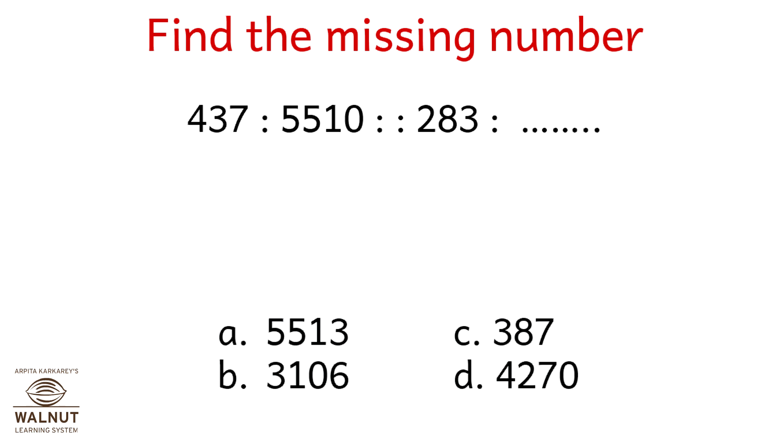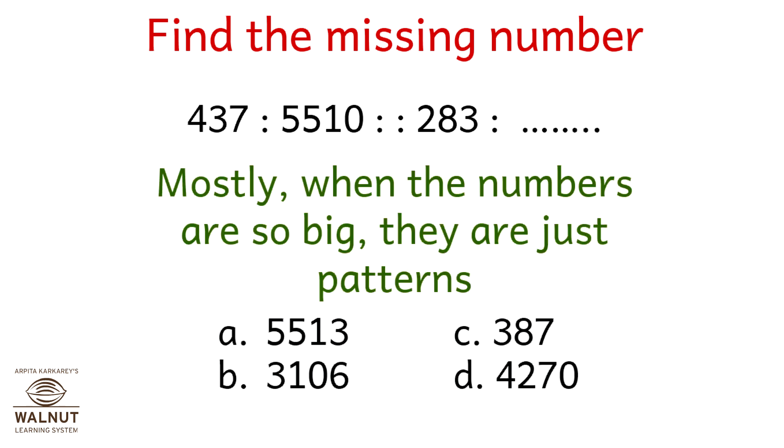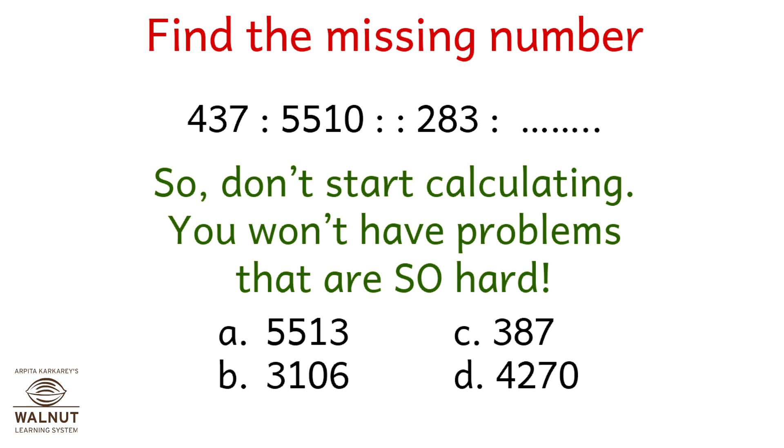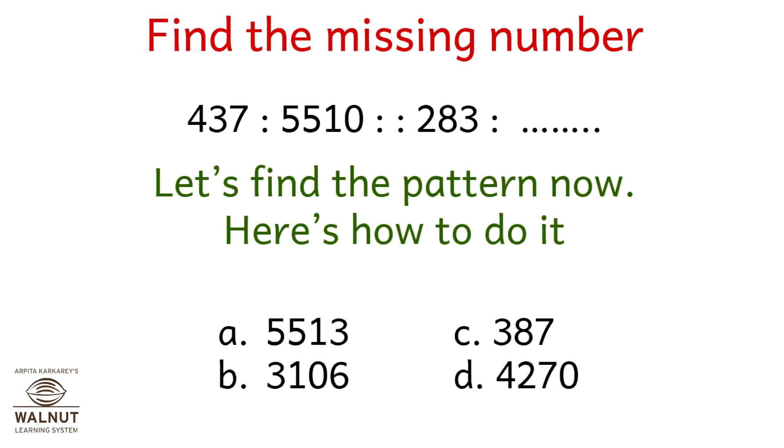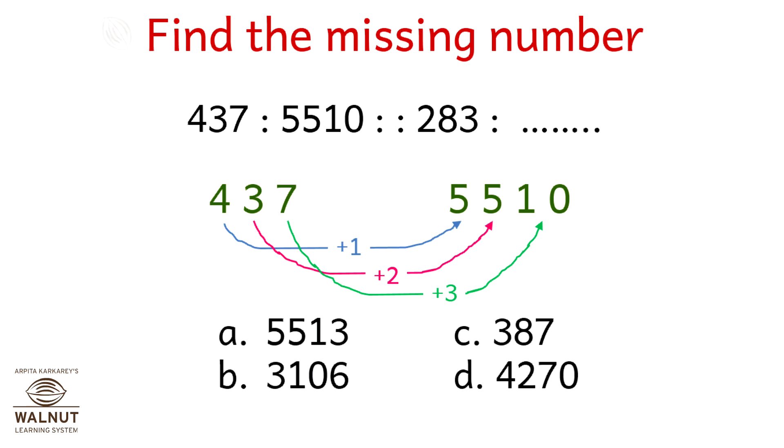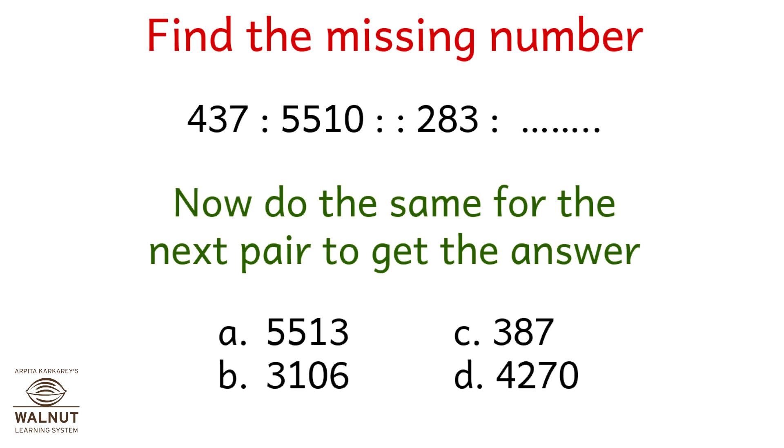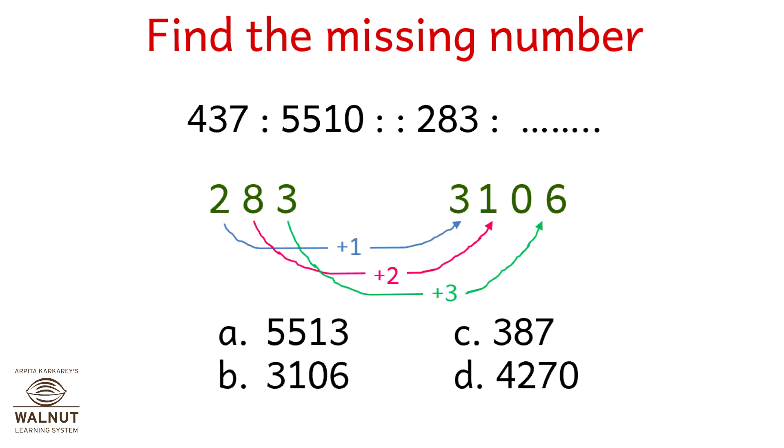Find the missing number here. The numbers have gotten big. 437 is to 5510 as 283 is to what? Mostly when the numbers are so big, they are just patterns. So don't start calculating. You won't have problems that are so hard. Let's find the pattern. 4 plus 1 is 5, 3 plus 2 is 5, 7 plus 3 is 10. Now do the same for the next pair to get the answer. 2 plus 1 is 3, 8 plus 2 is 10, and 3 plus 3 is 6. What do we have? The correct answer as option number b, 3106.